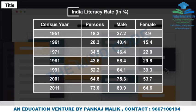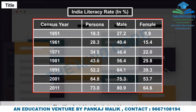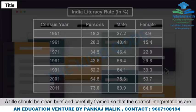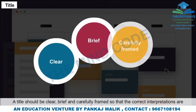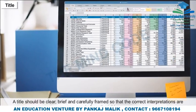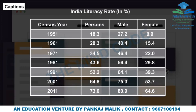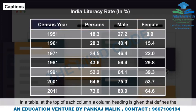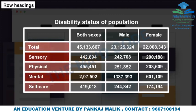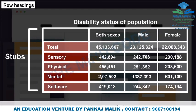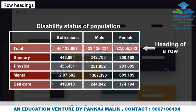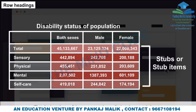Title and Captions: The title of a table tells what the table contains. A title should be clear, brief, and carefully framed so that correct interpretations are made. Captions are column headings at the top of each column that define the figures of the column. Row headings, also called stubs, are the headings of rows.